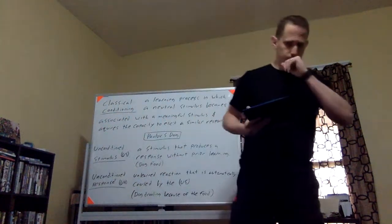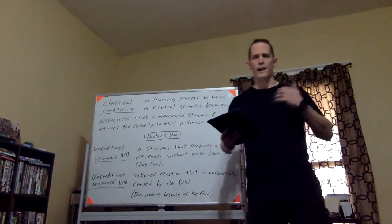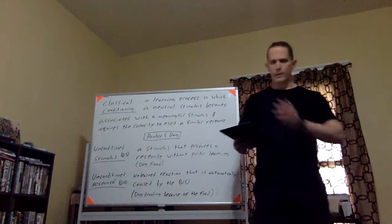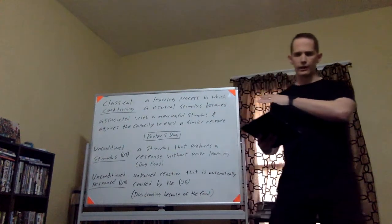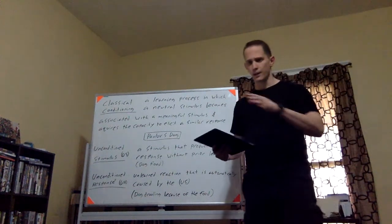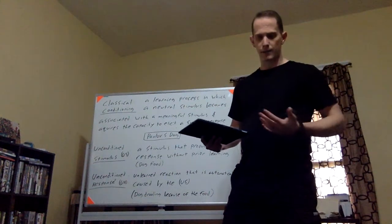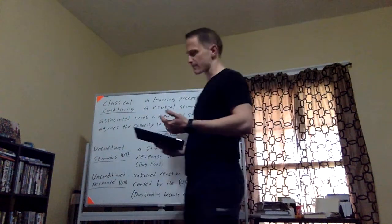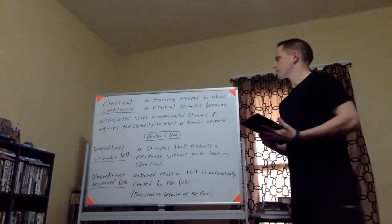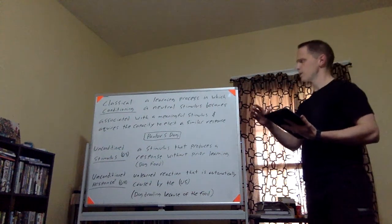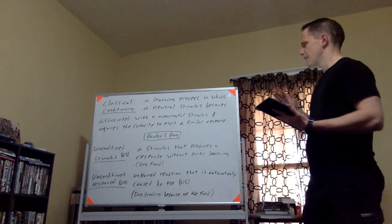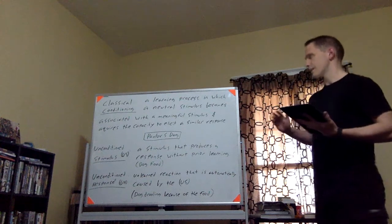So starting off, we're going to be discussing something called classical conditioning, and a guy by the name of Pavlov, and you'll hear in just a minute. This first part we're going to get down in our notes, and hopefully by the end of it, this first explanation or definition will make a little bit more sense. Classical conditioning: a learning process in which a neutral stimulus becomes associated with a meaningful stimulus and acquires the capacity to elicit a similar response.